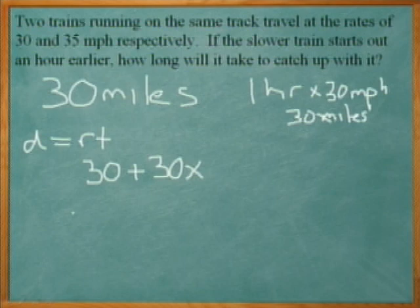Now the second train is traveling at 35 miles per hour. So its distance formula is going to be rate times time. So 35 miles per hour, 35 times x. Alright, so those are the two distance formulas for each train.